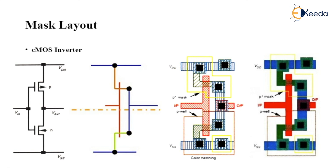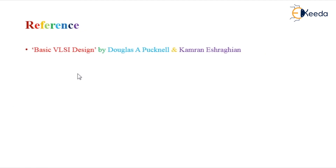To summarize: the CMOS inverter stick diagram has two supply rails (VDD/VSS) in blue (metal) with black contact cuts, polysilicon (red) crossing p-diffusion forming a pMOS transistor, polysilicon crossing n-diffusion forming an nMOS transistor, and the output in blue (metal). The resultant mask layout replaces color sticks with patterned bars. For reference, see the textbook 'Basic VLSI Design' by Douglas A. Pucknell and Kamran Eshraghian. In the next class, mask layouts and design rules will be discussed.